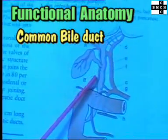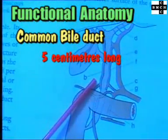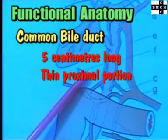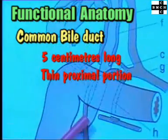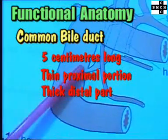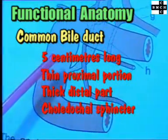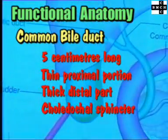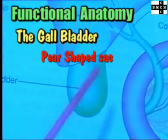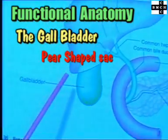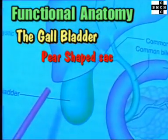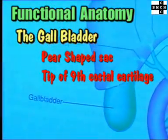The common bile duct is about 5 cm long and has a thin-walled wide lumen proximal part and a thick-walled narrow lumen distal part surrounded by the choledochal sphincter. The gallbladder is a pear-shaped sac lying underneath the right hemi-liver, with its fundus located anteriorly behind the tip of the 9th costal cartilage.